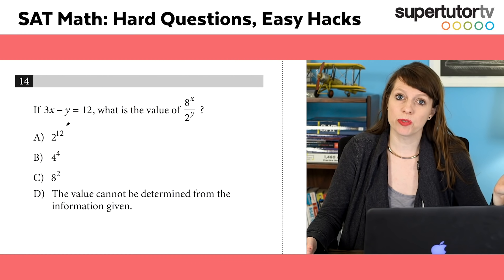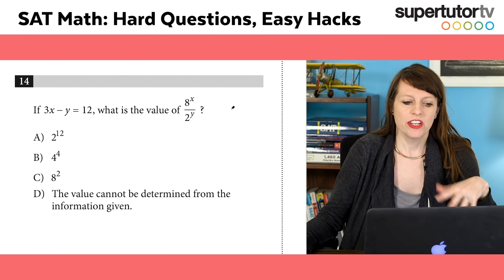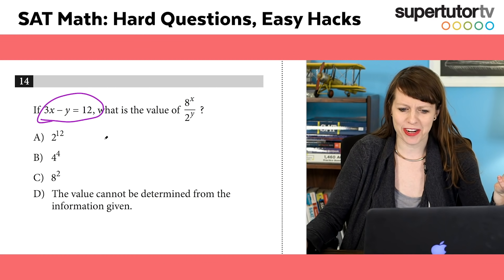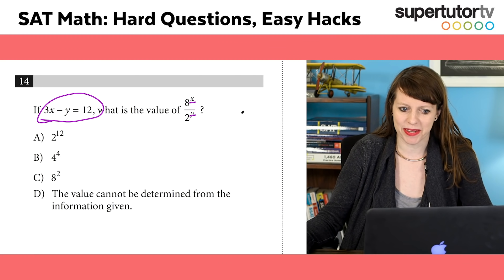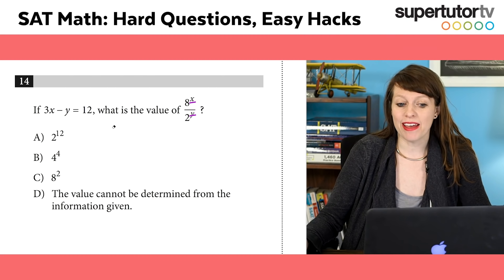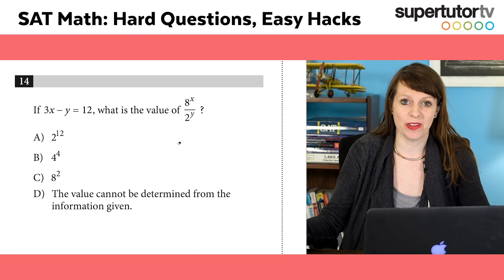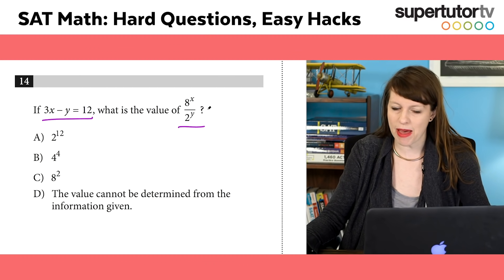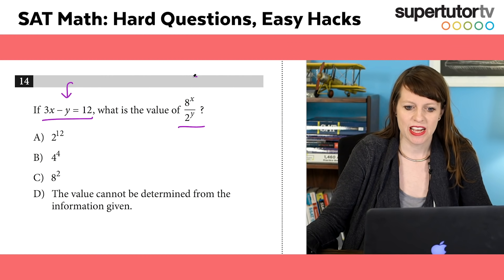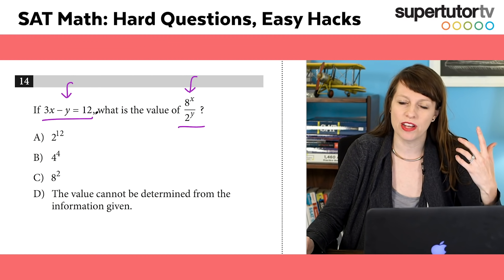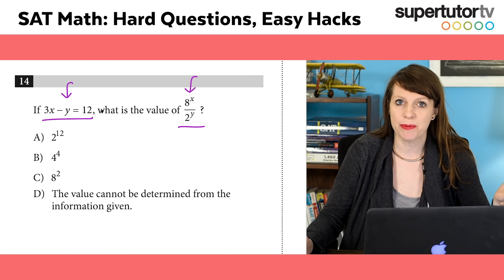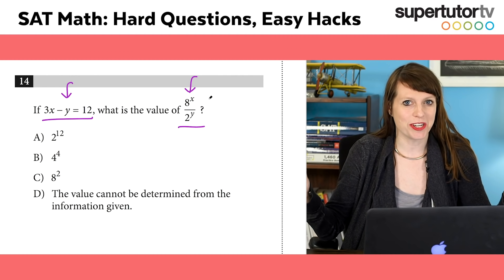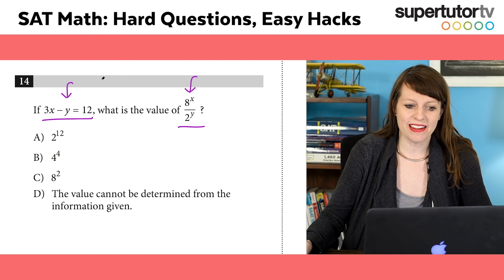If 3x minus y equals 12, what is the value of 8 to the x over 2 to the y? A lot of you look at this and go, there's no way I can solve for x or for y over here, so how am I supposed to know what x is and y is so I can plug them in? I can understand why this might stump a lot of you, but it's actually way easier than it looks. This is a pattern I like to call equation expression. Once you know that technique, this seemingly hard question becomes pretty easy.